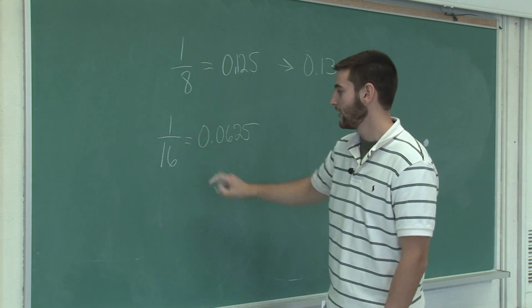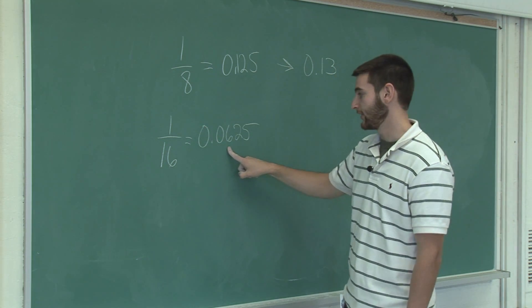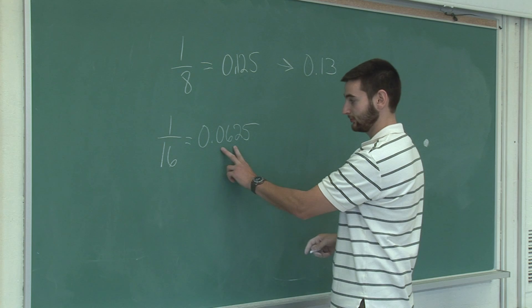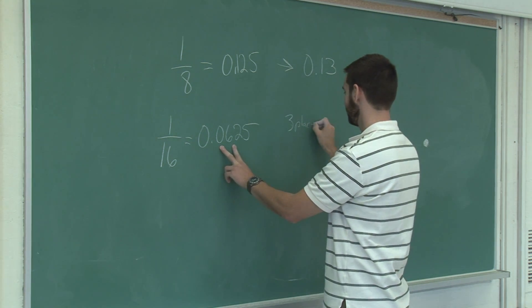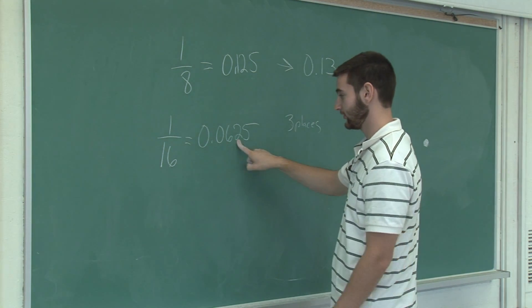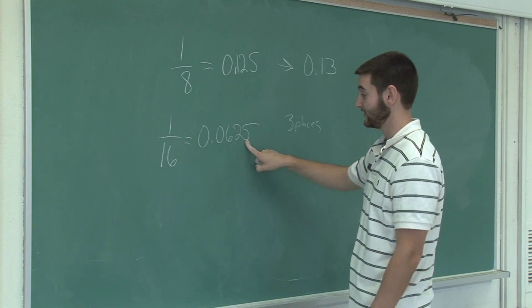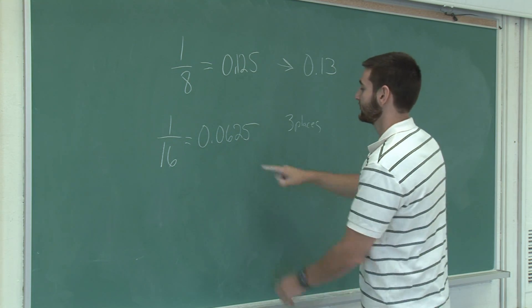Now, depending on the level of rounding required, we could round it to three decimal places, where we would look at the two, and its neighbor digit is five, which warrants rounding.